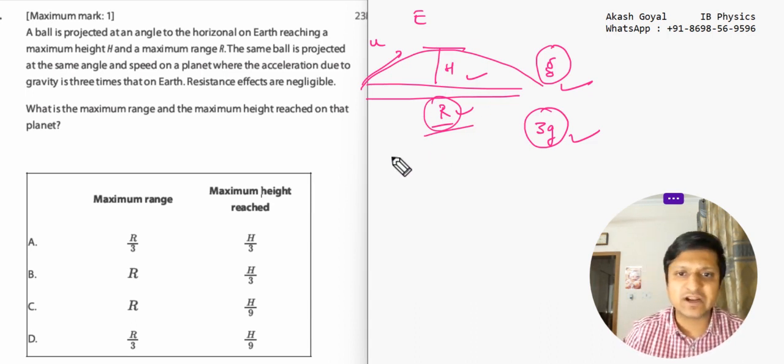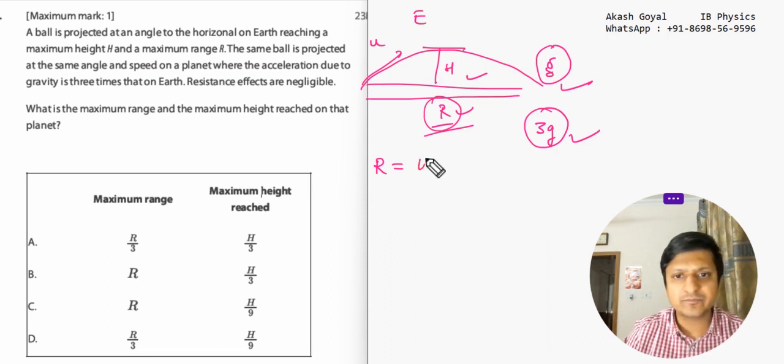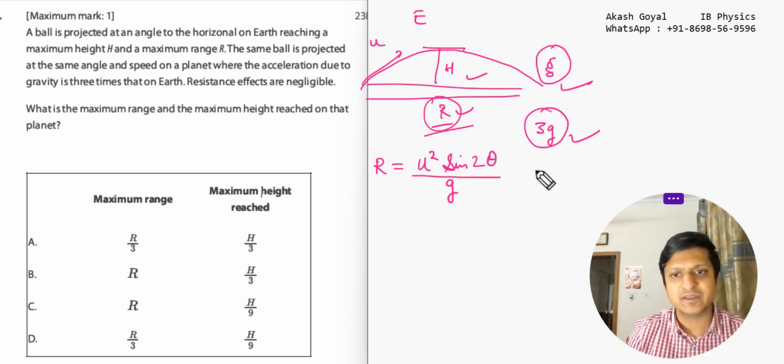So first of all, we have to write the formulas that we have already learned. You can use your data booklet. The formula for range is u square sine 2 theta by g, and for height is u square sine square theta upon 2g.